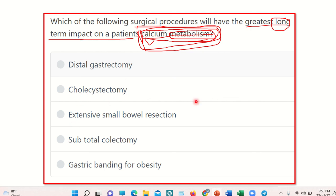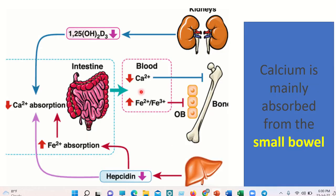For subtotal colectomy, we know the colon mainly absorbs water and other substances but does not absorb vital nutrients like calcium or iron. In the case of gastric banding, there is also no significant role in calcium metabolism.